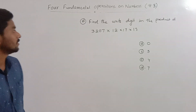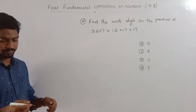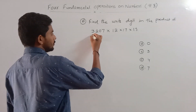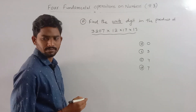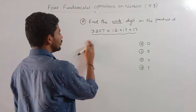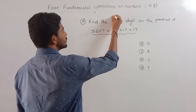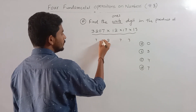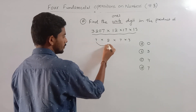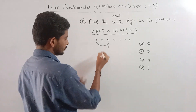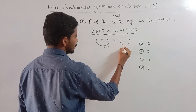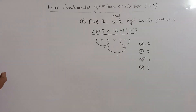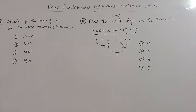Okay, look at question 10: find the units digit in the product of 3207 × 12 × 17 × 13. We only need to chase the units digits. Units digit of 3207 is 7, 12 is 2, 17 is 7, 13 is 3. So 7 × 2 = 14, units digit 4; 4 × 7 = 28, units digit 8; 8 × 3 = 24, units digit 4. The answer is 4.